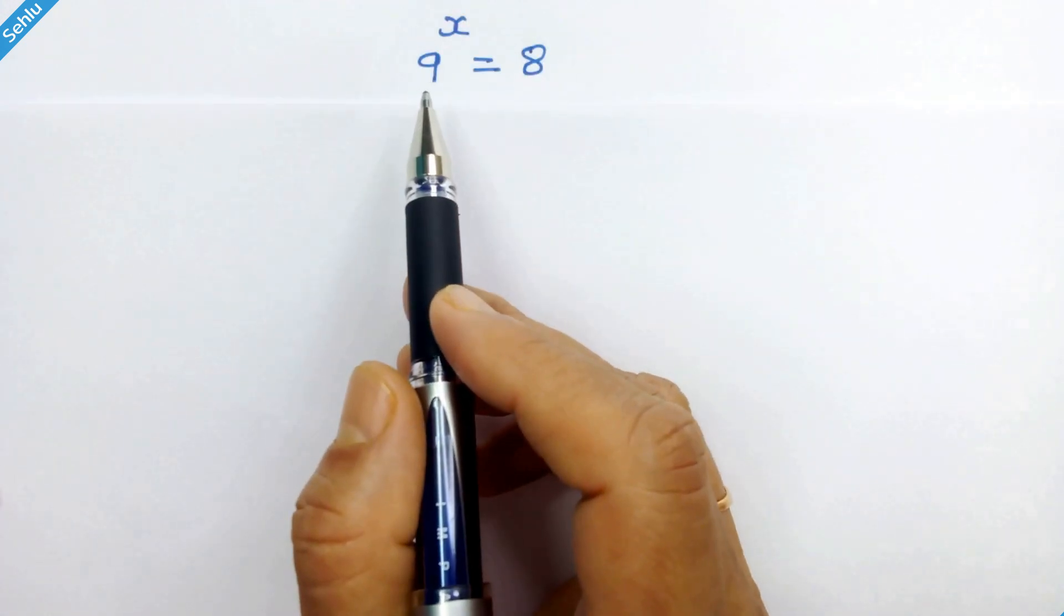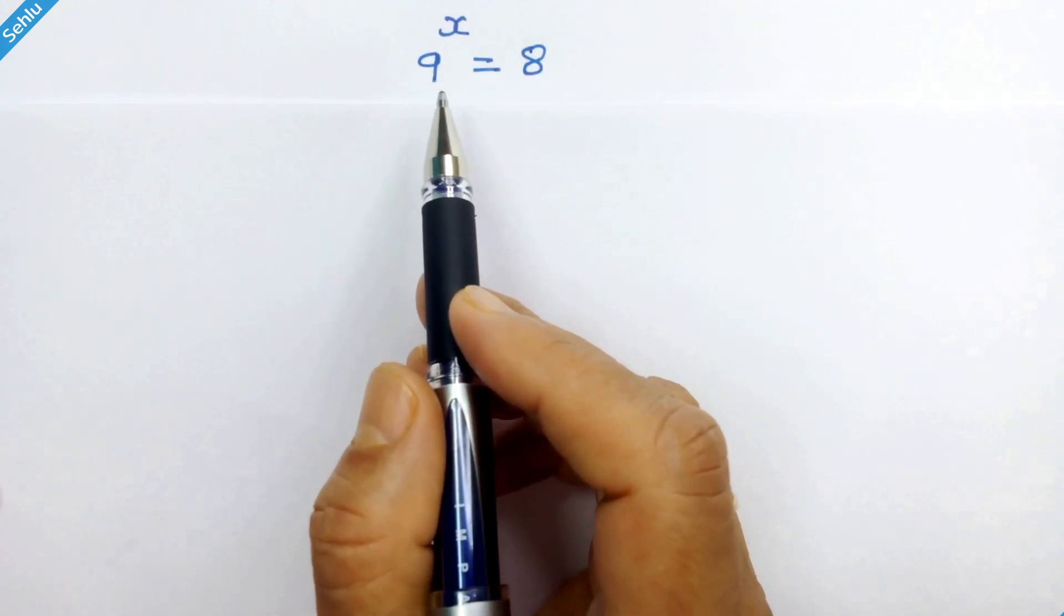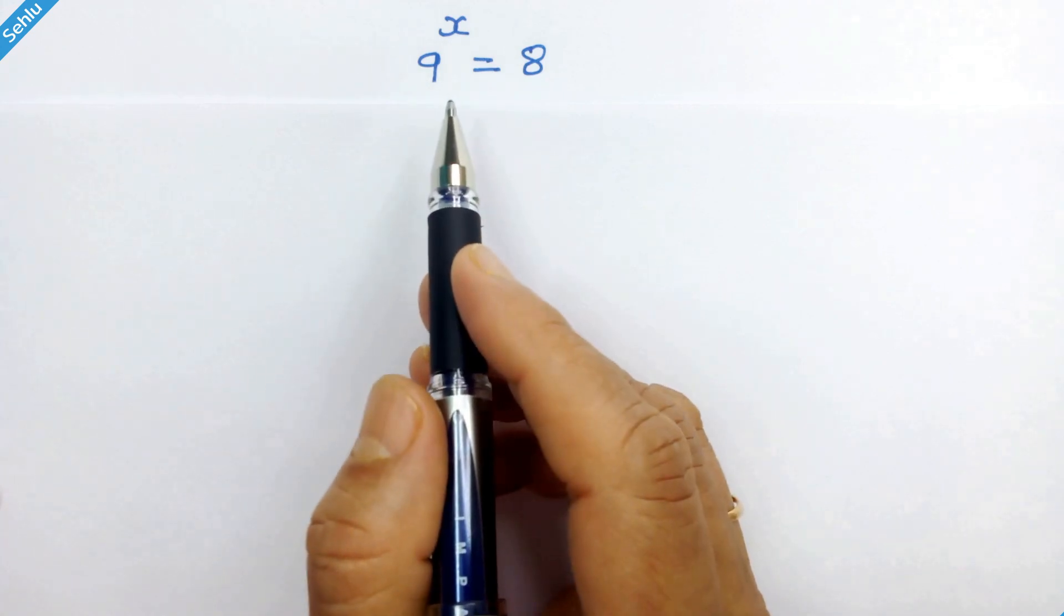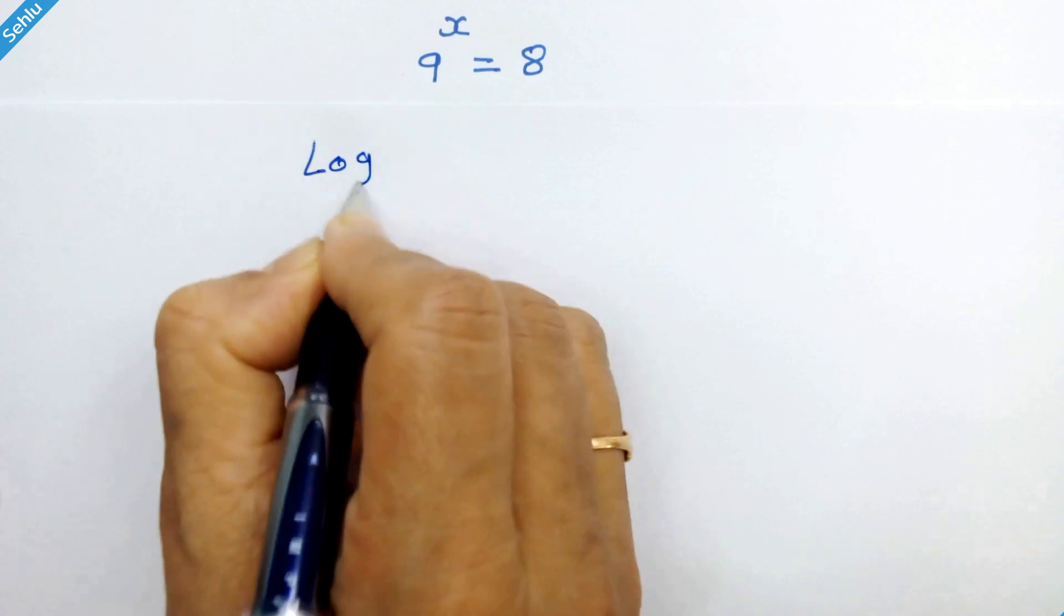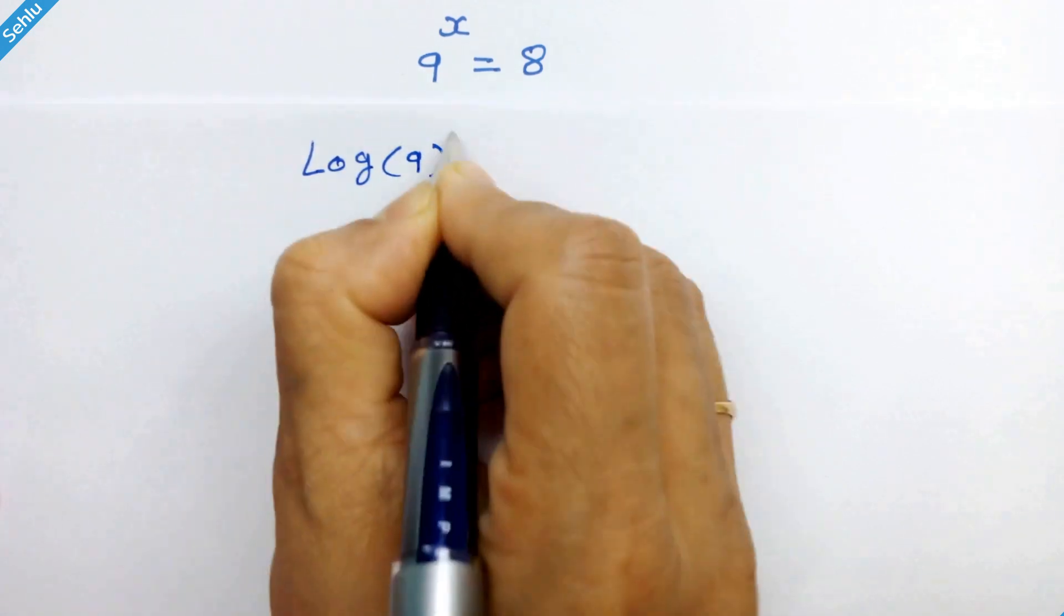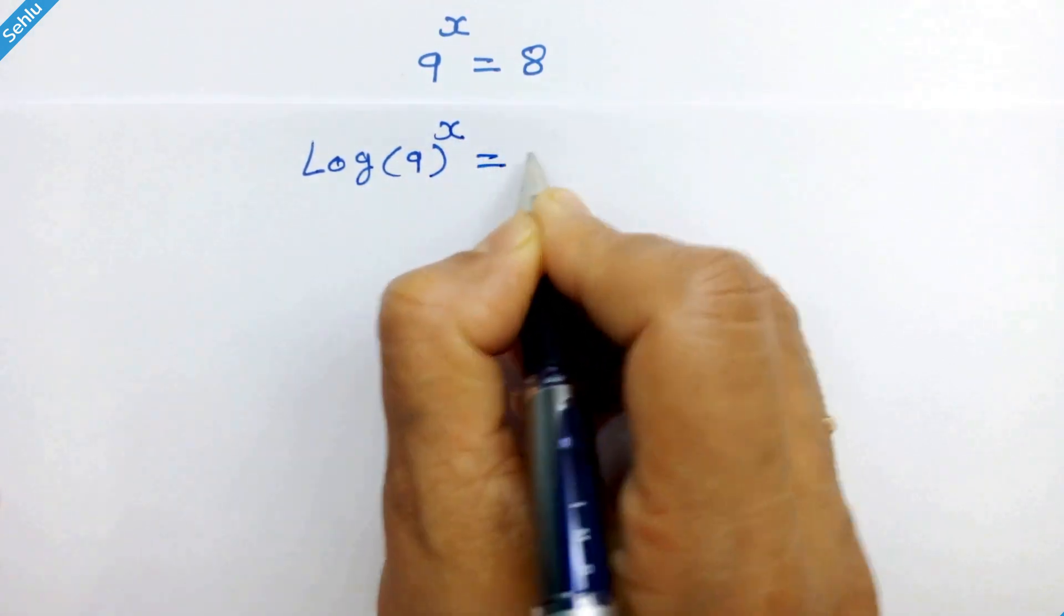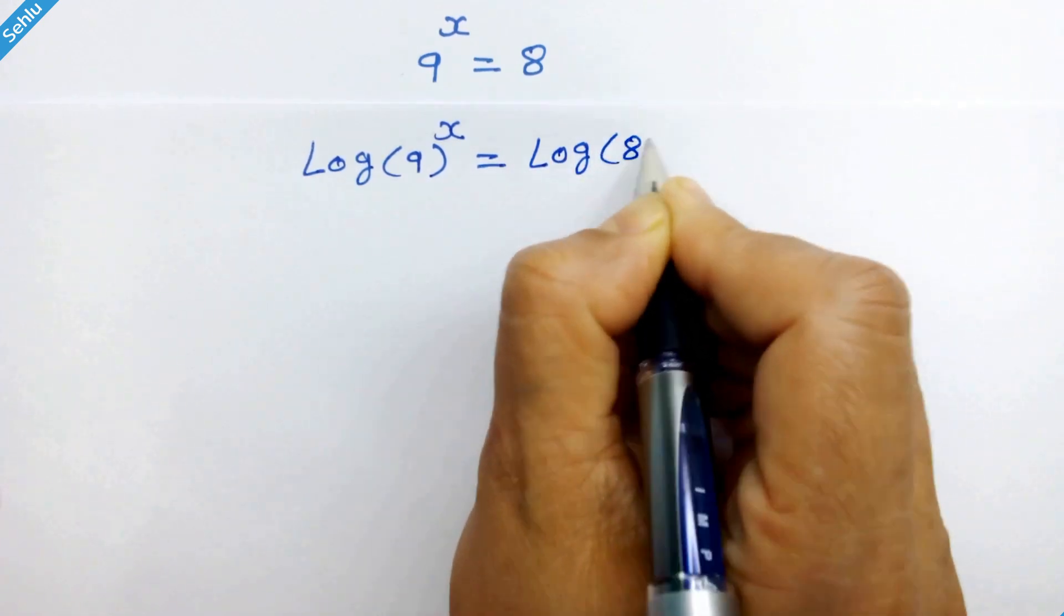Now it is clear that the answer will be some complex decimal value, and for that we need to take log. So we have log of 9 raised to x is equal to log of 8.